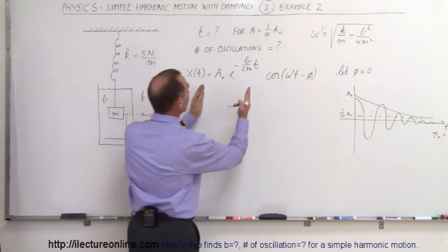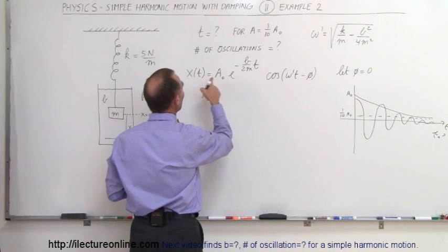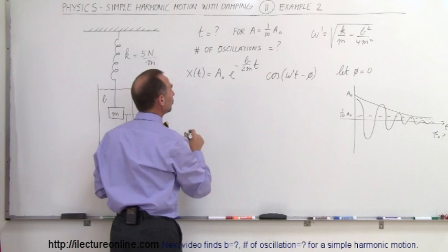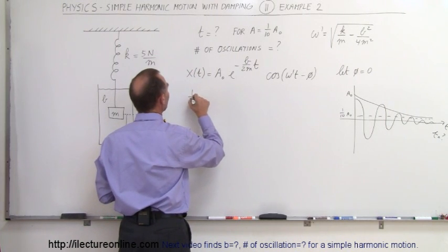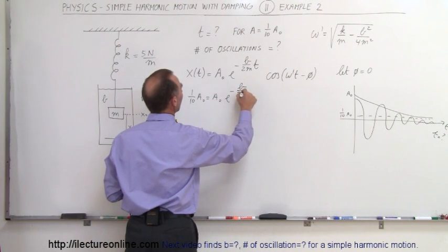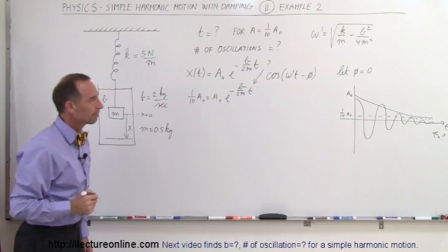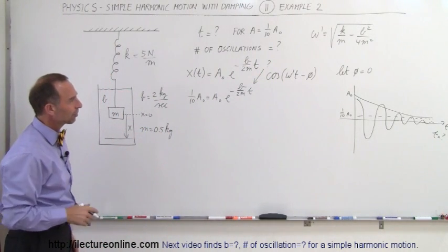Well, it's this portion of the equation that determines that. And so what we can say is that x will be 1 tenth of its original amplitude, so we say that 1 tenth a sub-naught equals a sub-naught times e to the minus b over 2m times t, and now we're going to solve for t.